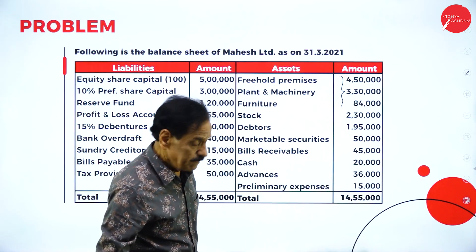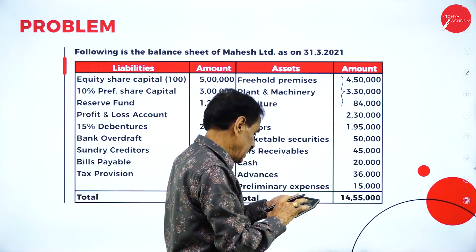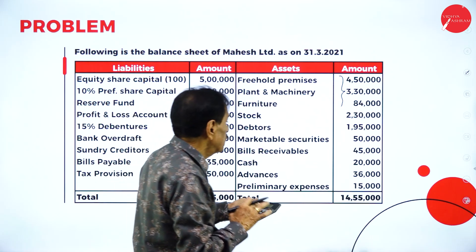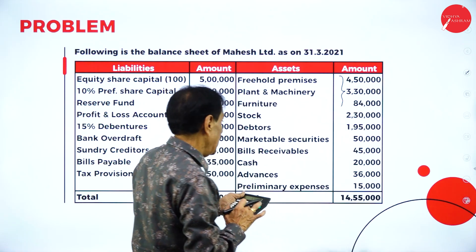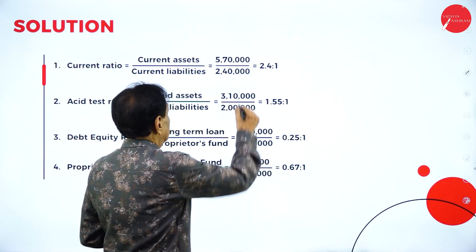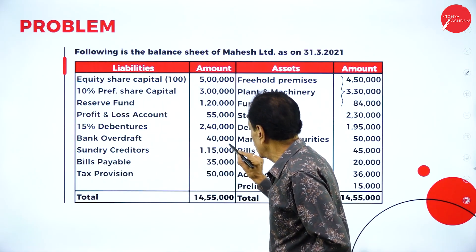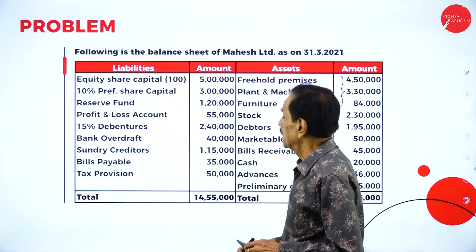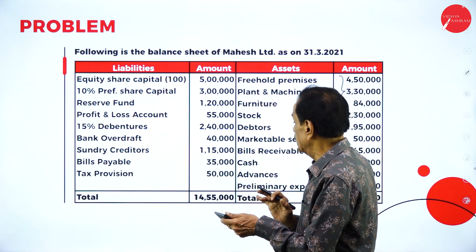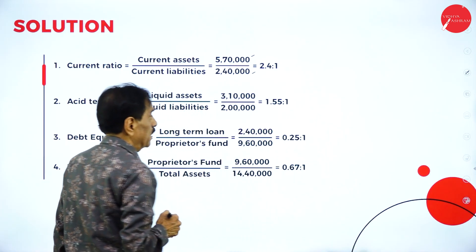Current assets: stock 2 lakh 30,000 plus debtors 1 lakh 95,000 plus marketable securities 50,000 plus bills receivable 45,000 plus cash 20,000 plus advances 36,000 — total current assets are 5 lakh 70,000. Current liabilities: bank overdraft 40,000 plus creditors 1 lakh 15,000 plus bills payable 35,000 plus taxation 50,000 — total current liabilities are 2 lakh 40,000. Current ratio is 5 lakh 70,000 to 2 lakh 40,000, which gives approximately 2.4 to 1.